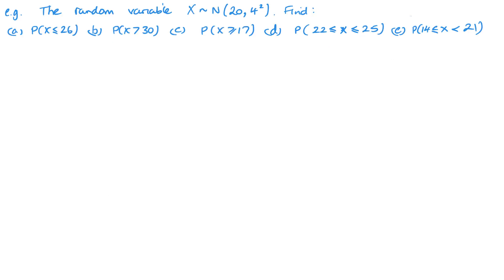Let's look at some questions and how we go about setting everything up. You will be able to skip some of these steps, but I'm going to set it out in a way that is easy to follow and that you can always apply to any question. Before I do this, one additional piece of information: the formula z = (x − μ) / σ, showing how z relates to our random variable.